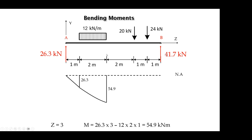The third point is where Z equals 3, the end of the UDL. There, the moment is 26.3 multiplied by 3, minus 12 multiplied by 2 multiplied by 1 (the distance from the middle of the UDL to the calculation point), giving a positive value of 54.9 kNm. The variation under the UDL is parabolic, not a straight line, because under a UDL the bending moment has a parabolic variation.